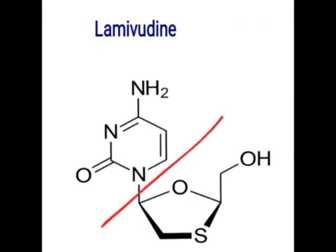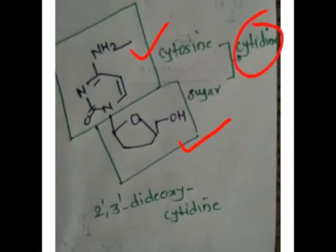The next drug is lamivudine. It consists of a nitrogenous base and a sugar, but instead of carbon at the 3' position, it has sulfur. This is cytosine with a modified sugar, so it is called cytidine. Since lamivudine has a sulfur group at the 3' position, it is called 3'-thiacytidine. By kinase it is converted into monophosphate, diphosphate, and triphosphate, and this triphosphate form enters DNA or RNA synthesis causing chain termination.